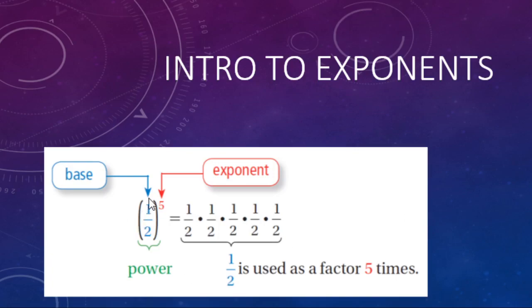Quick review: for powers, the base and the exponent — the exponent tells you how many of the bases are being multiplied together. In this case, five one-halves being multiplied. The main word for that is 'factor' — five factors of one-half, five one-halves being multiplied. Have a nice day and catch you on the next one.